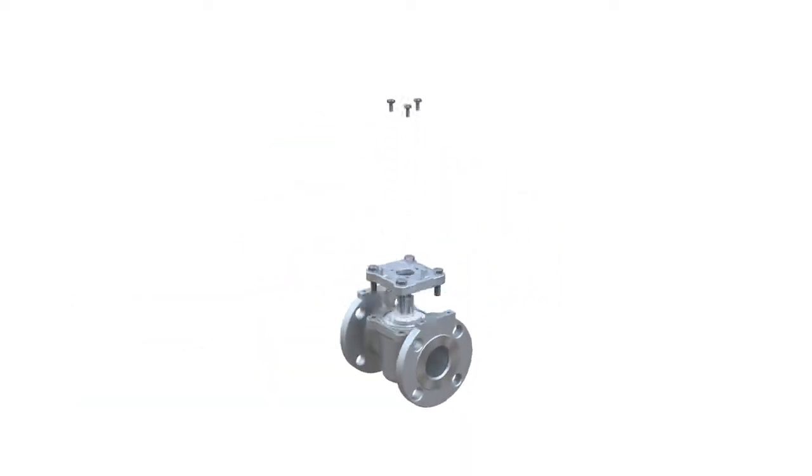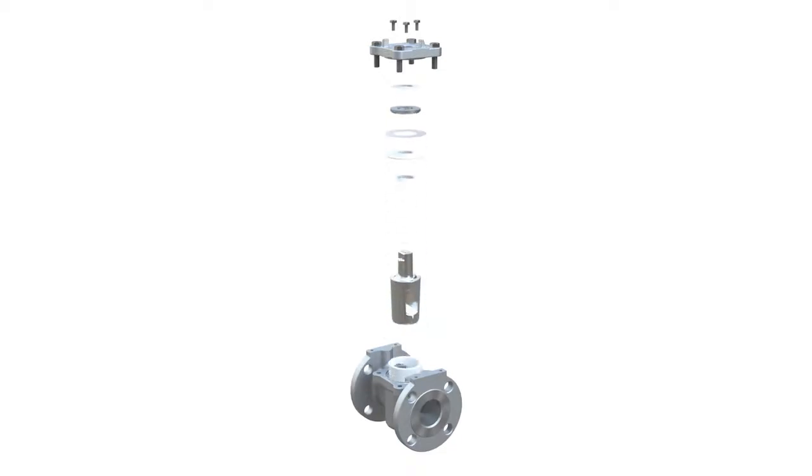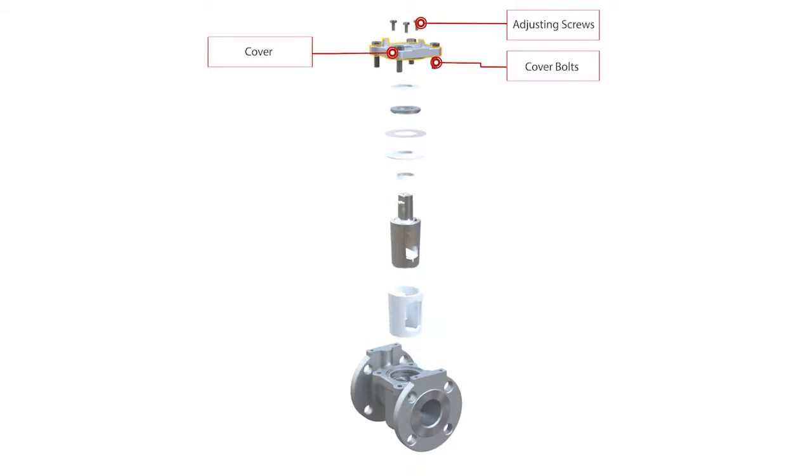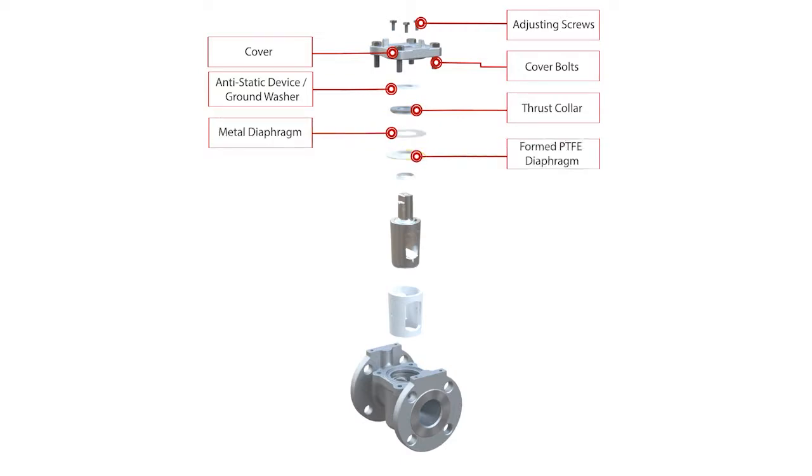The complete bill of material of a standard Zomox sleeved plug valve contains the adjusting screws, cover, and cover bolts. The top seal is comprised of the anti-static device, thrust collar, metal diaphragm, PTFE membrane, and PTFE wedge ring, followed by the plug, sleeve, and body.